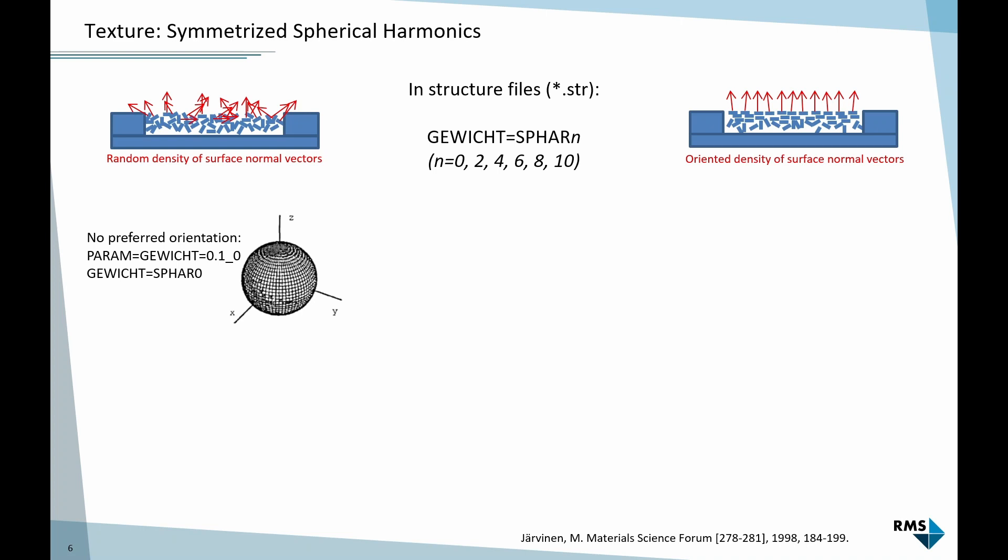What this describes is the complexity of the texture model. If we show the density of the directions of the crystals, at the top of the screen I showed a randomly oriented powder on the left and a strongly oriented powder on the right. If we show the normal vectors from a certain crystal phase, they are randomly showing in all directions on the left, and they are all pointing in the same directions on the right.